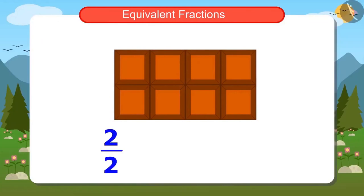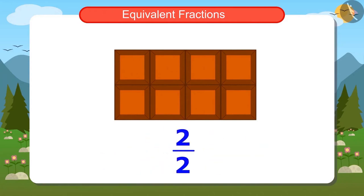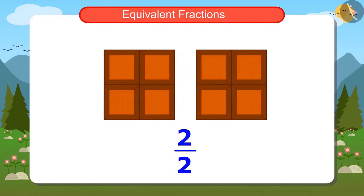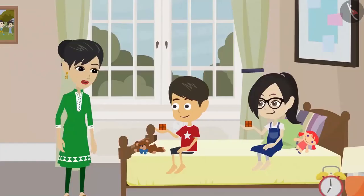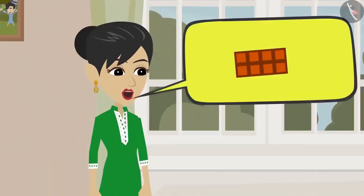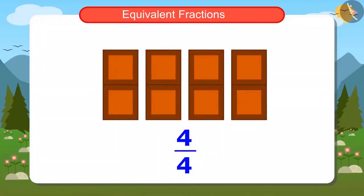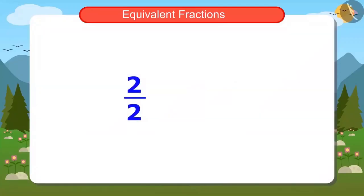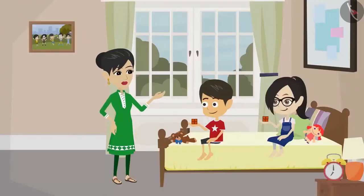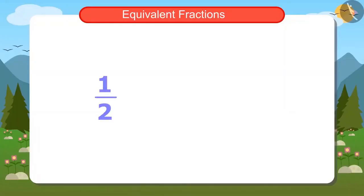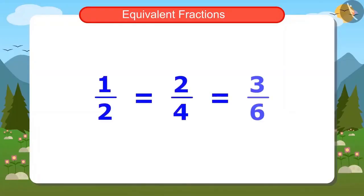Mummy asks Riyanj and Vandana to split the chocolate into two halves and four fourths and find out how many pieces both of them get. Two halves means both parts of the two equal parts of the whole chocolate — that means the whole chocolate. Mummy confirms this. Four fourths means four parts out of four equal parts — that also means the full chocolate. This means two halves and four fourths are equal quantities, but these two are different fractions.